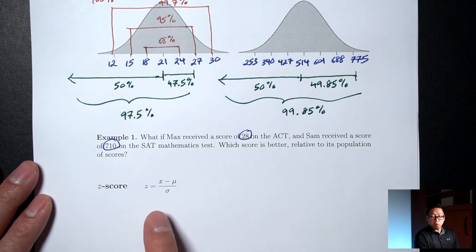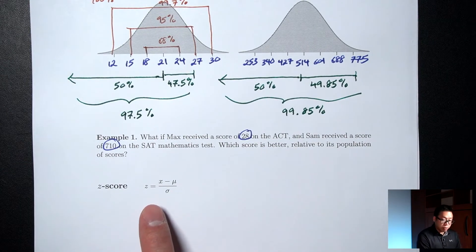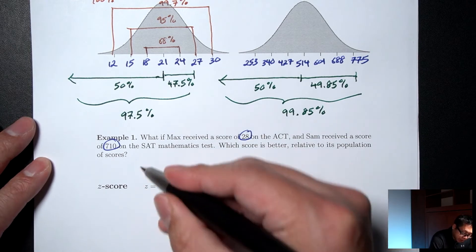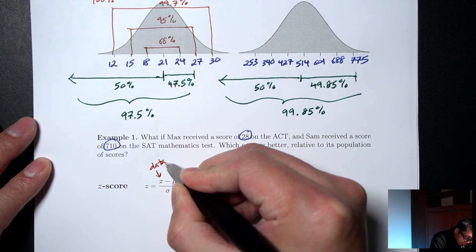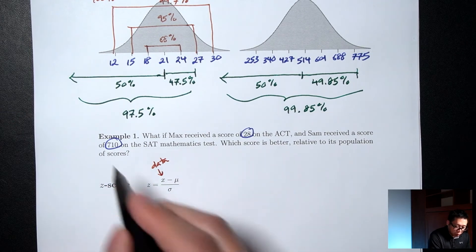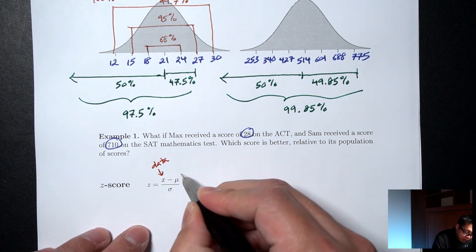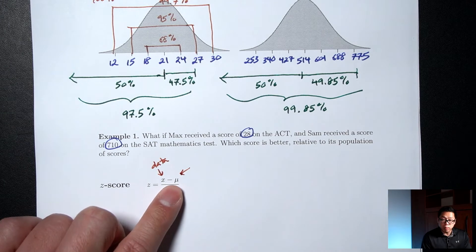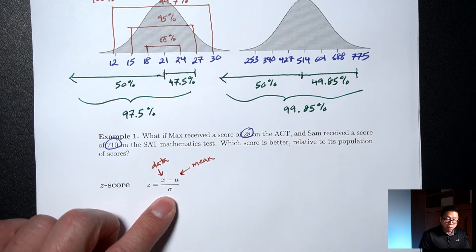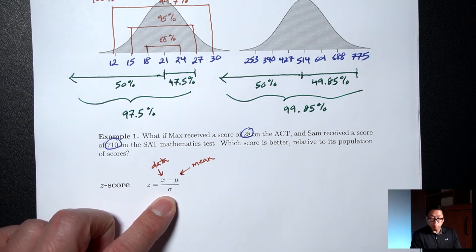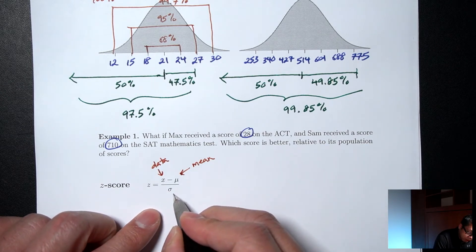We use what's called a z-score. So let me tell you what each part of this formula means. The x is our data. In this case, it's the scores. The mu, so this is the mu, we've seen the symbol before, it's a symbol for the mean. On the bottom, that's a sigma, we've seen that symbol before. That's the symbol for the standard deviation.